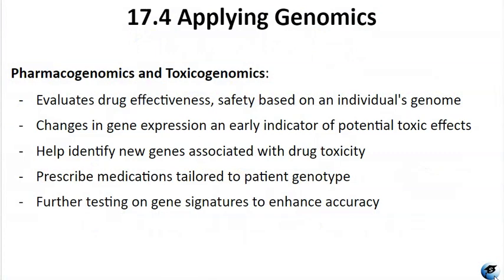Pharmacogenomics, also known as toxicogenomics, assesses drug effectiveness and safety based on the individual's genomic sequence. Genomic responses to drugs are studied using experimental animals or live cells in the lab before human studies. Analyzing changes in gene expression can serve as an early indicator of potential toxic effects, such as cancerous cell growth when genes involved in cellular growth and controlled cell death are disrupted. Genome-wide studies aid in identifying new genes linked to drug toxicity, and personal genome sequence information allows medical professionals to prescribe medications tailored to the patient's genotype for optimal effectiveness and minimal toxicity.